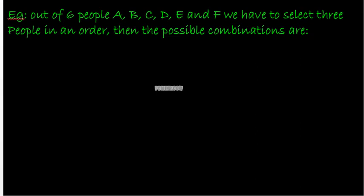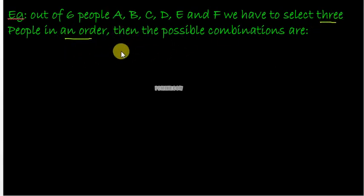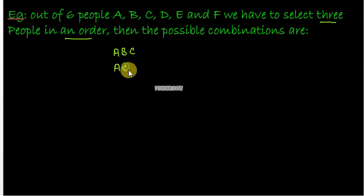Let's look at an example to understand the difference between when to use permutations and when to use combinations. If out of six people A, B, C, D, E, and F, we have to select three people in an order, then the possible arrangements are — say you select A, B, C — there are six possible arrangements for these three people: ABC, ACB, BAC, BCA, CAB, or CBA.